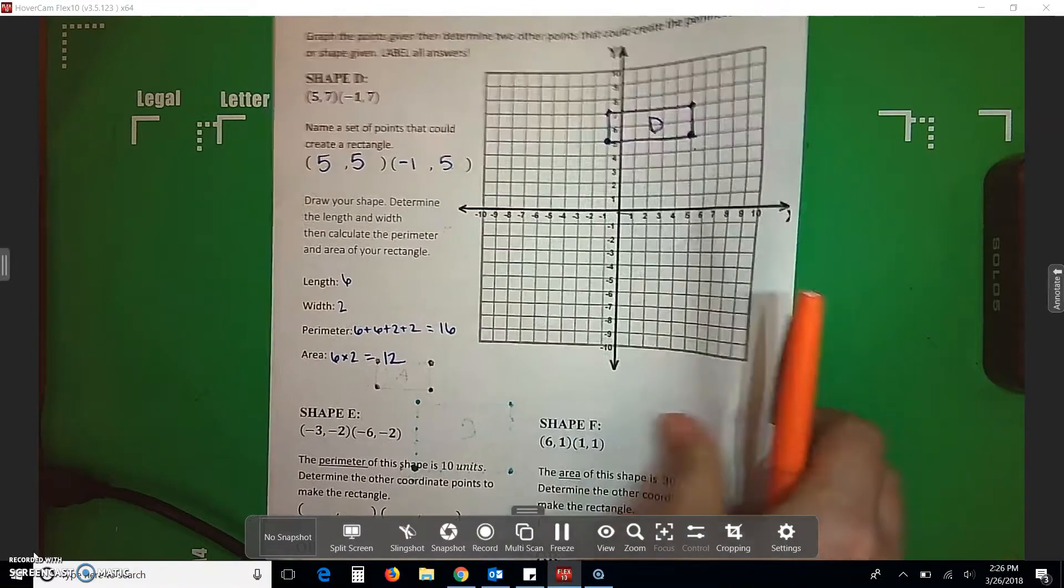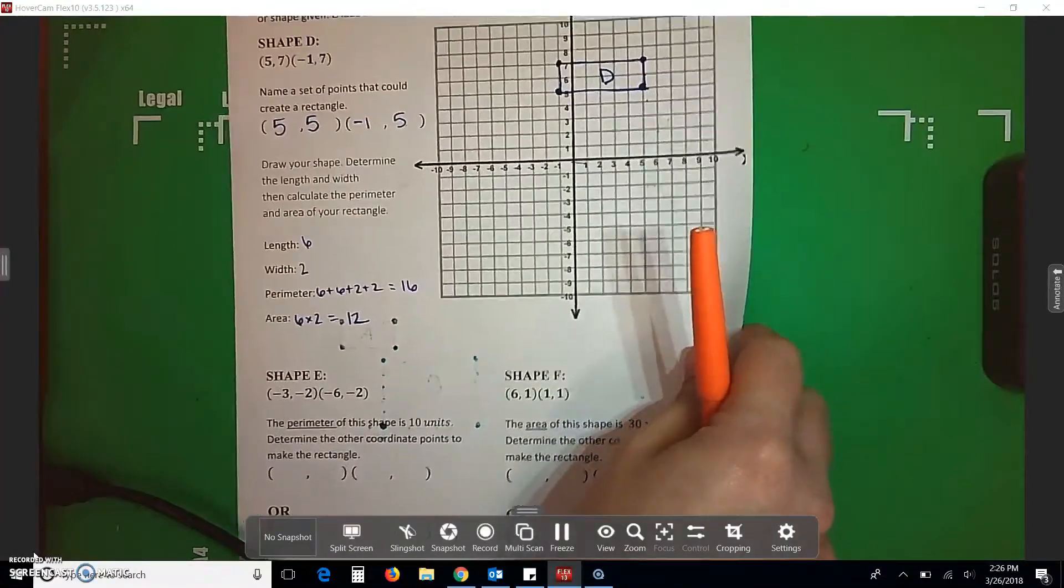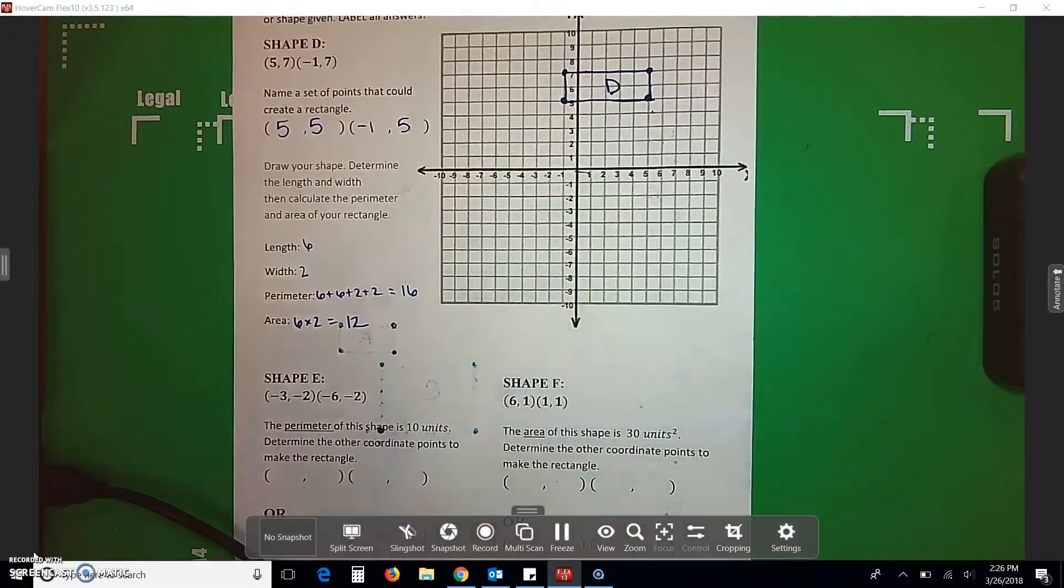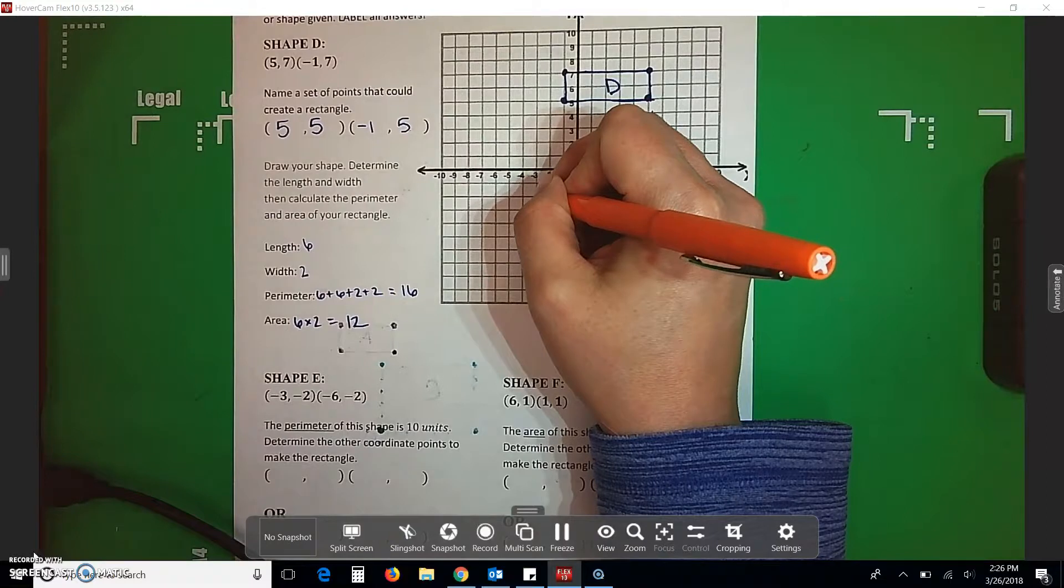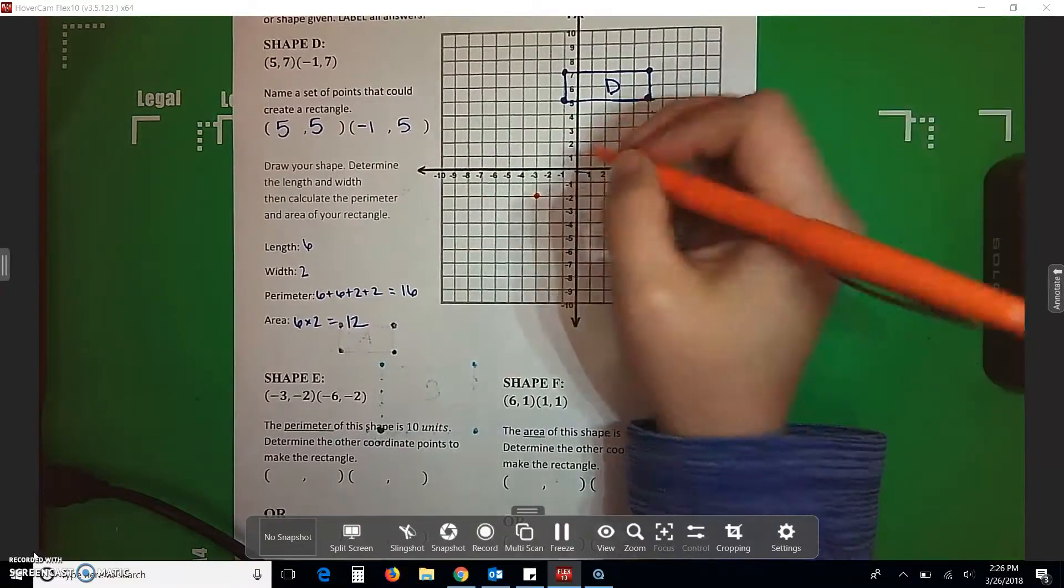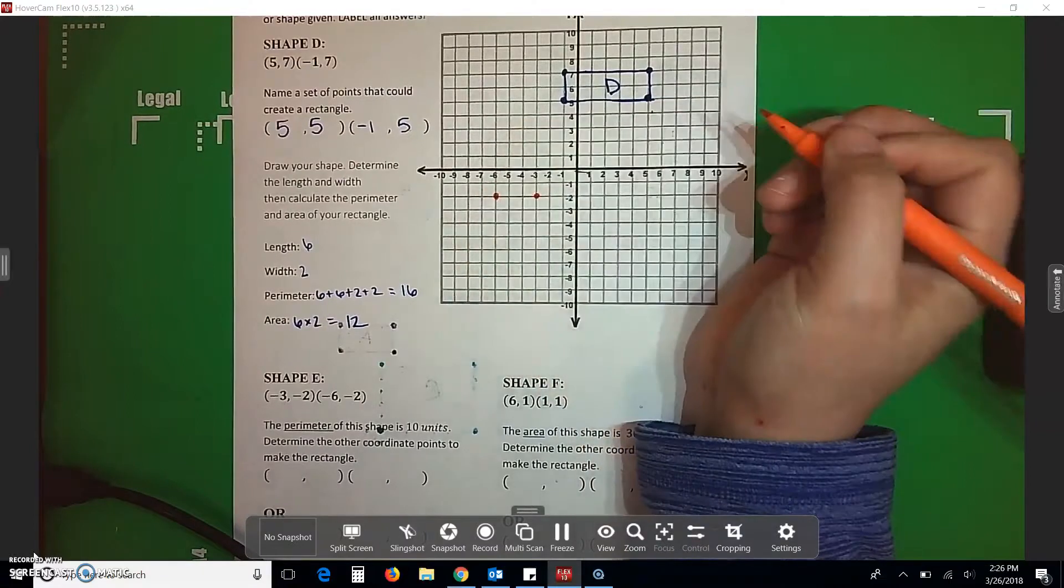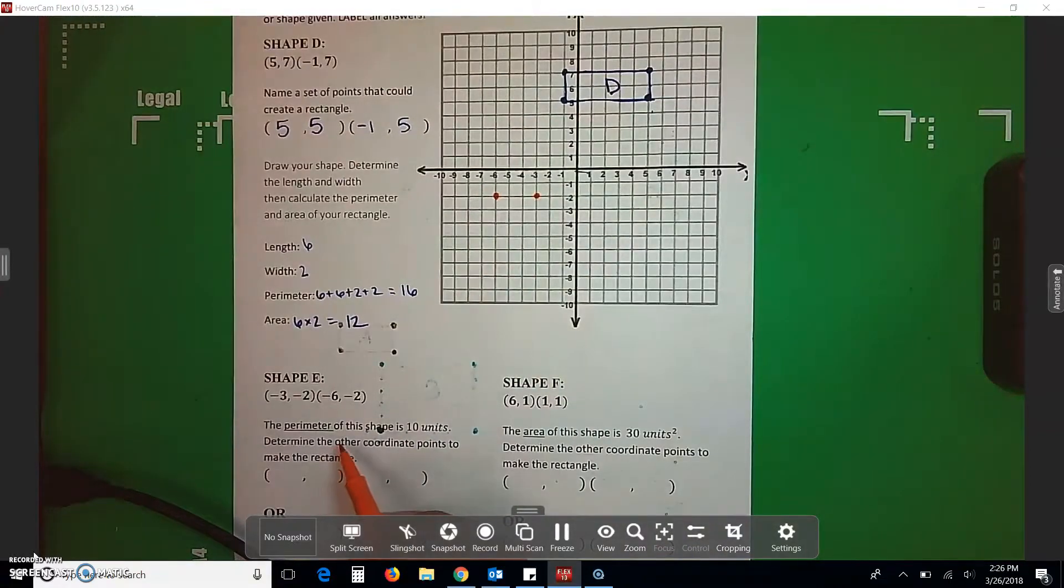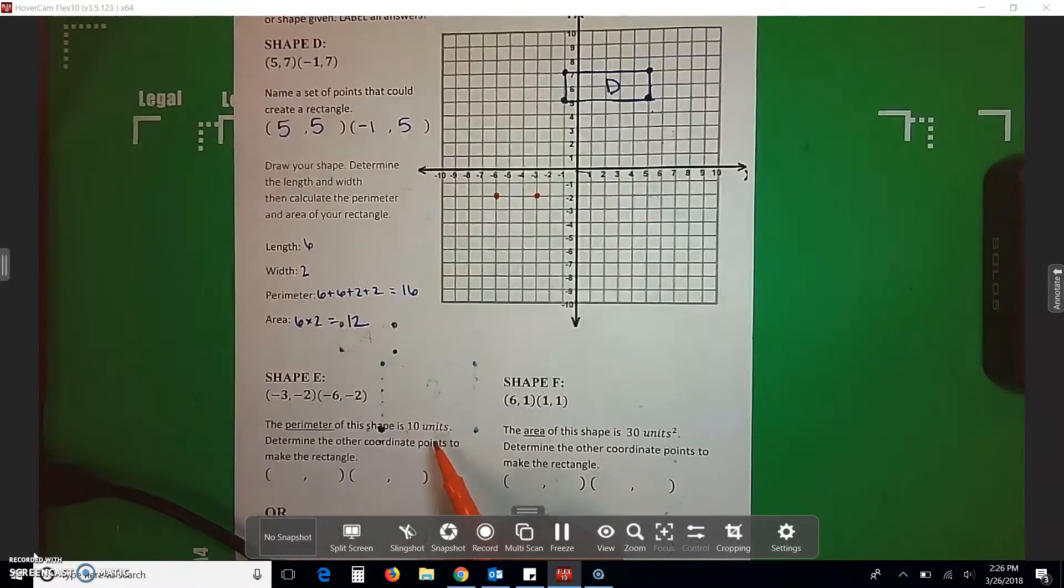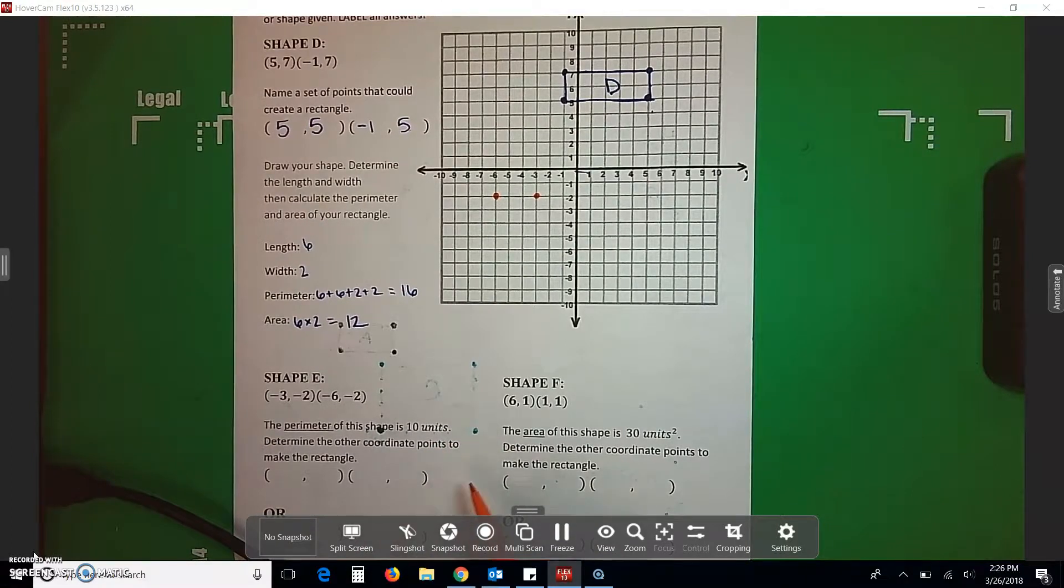Then I come down here to shape E. And I know you're watching this video after spring break. Apparently, I hope you figured out that I'm doing this before spring break. Shape E, we start off with negative 3, negative 2. There's my first dot. Negative 6, negative 2. There's my second dot. It says the perimeter of this shape is 10 units. Determine the other coordinate points to make a rectangle.